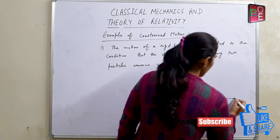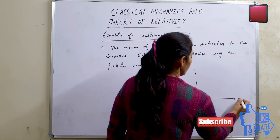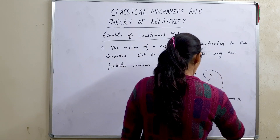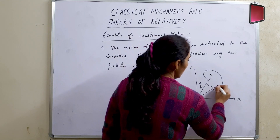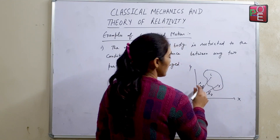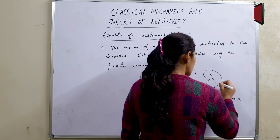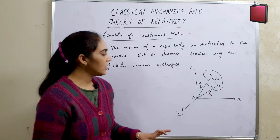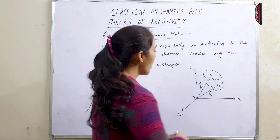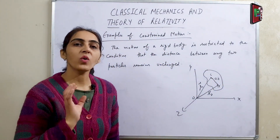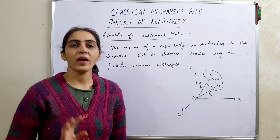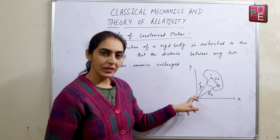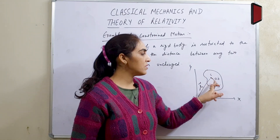मालो हम एक rigid body consider करते हैं। इस rigid body के अंदर i-th particle है जिसका position vector origin से rᵢ है, और j-th particle है जिसका position vector origin से rⱼ है। इनके बीच की distance मैंने cᵢⱼ ले ली। तो rigid body की condition है कि distance between any two particles constant रहती है।